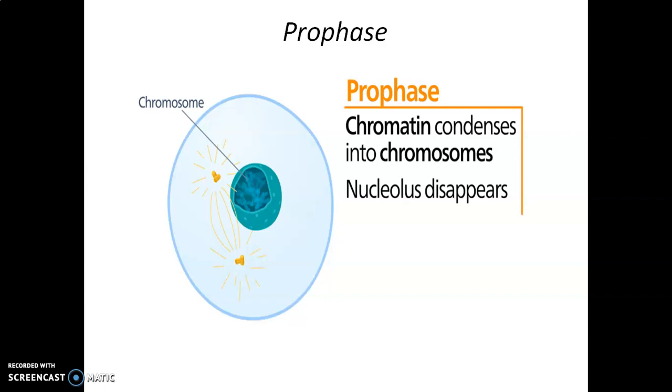Children, this is the first phase, that is prophase. Prophase is the first stage of karyokinesis that follows the S and G2 phase of the interphase. Do you remember the synthetic phase and gap 2 phase of cell cycle?